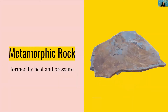Metamorphic rocks are formed by applying heat and pressure. The rock you see here is slate. They're typically made when other rocks are put through intense heat and pressure. For example, if a rock is deep below the Earth's surface, it will experience a lot of heat from being close to magma and a lot of pressure from being so far down. This can transform any kind of rock into a metamorphic rock.